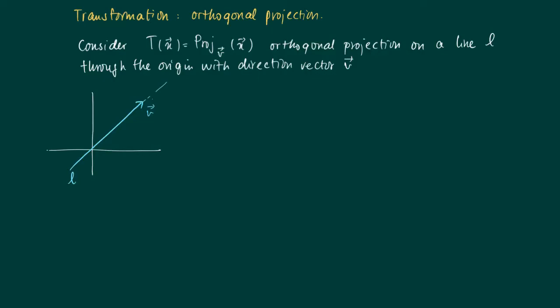Consider the orthogonal projection on a line L through the origin with direction vector v. We've seen that this is a linear transformation.